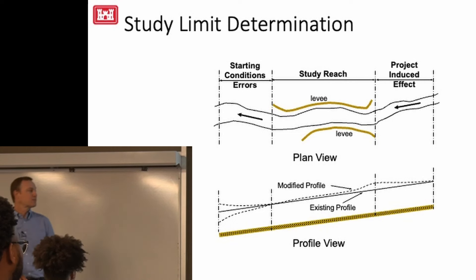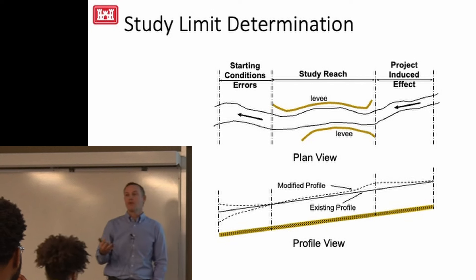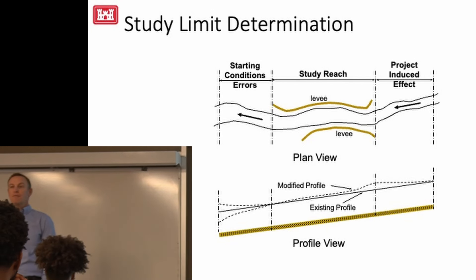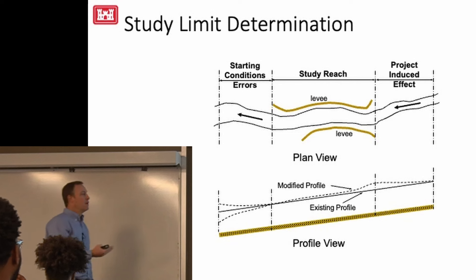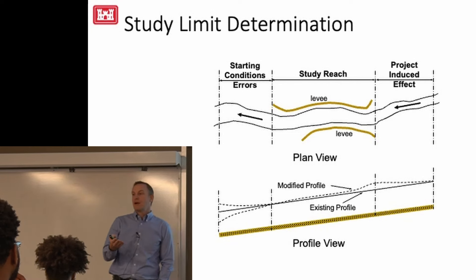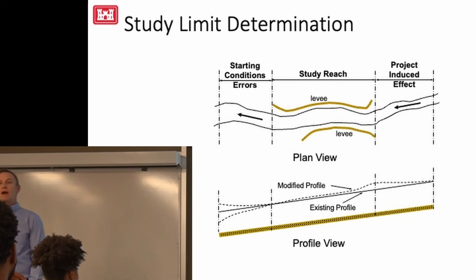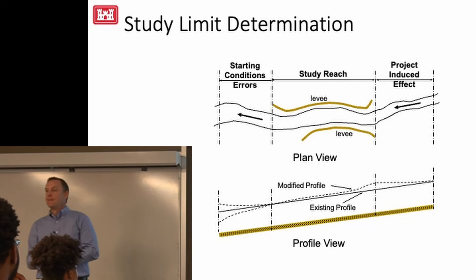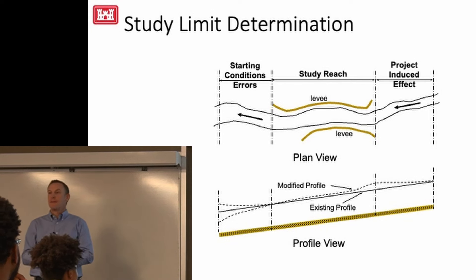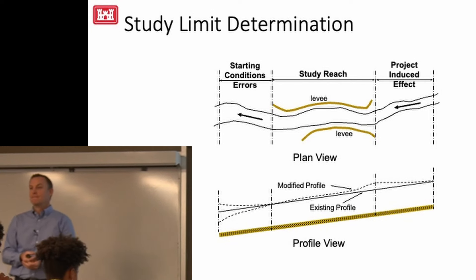The question is: how do you determine if you've started your downstream boundary condition far enough downstream, or extended your model far enough upstream? Are you going to use a calculator, use RAS, or ask a colleague? How would you evaluate whether your model extends downstream far enough? One suggestion from a student: do a sensitivity test.